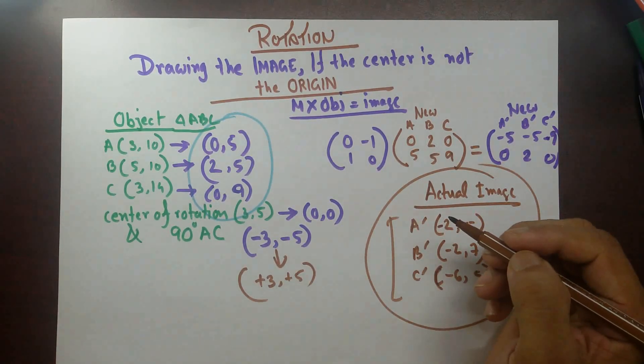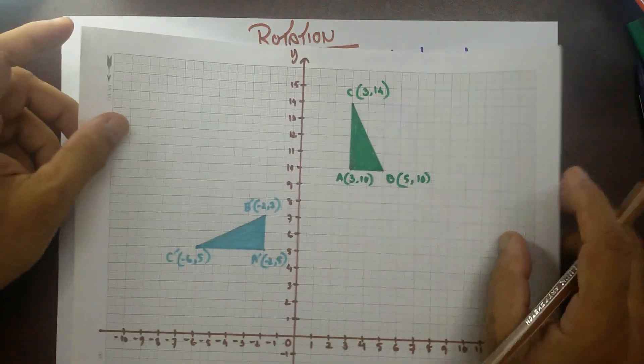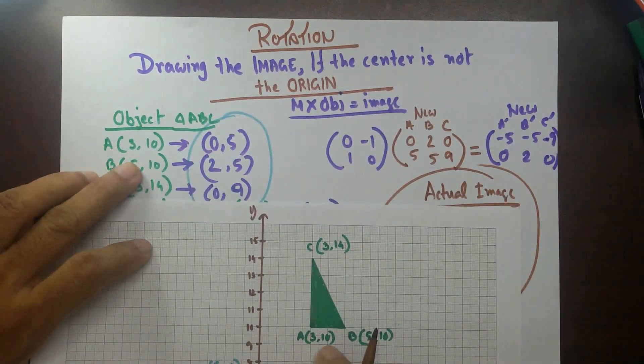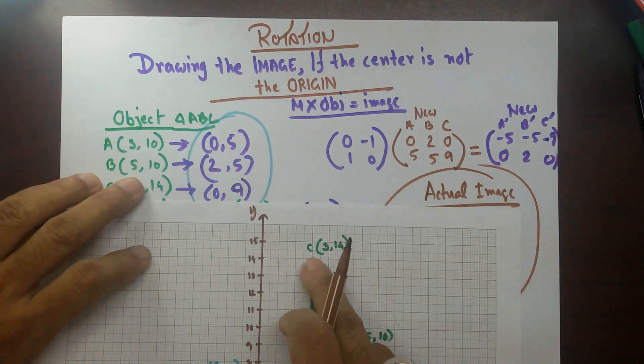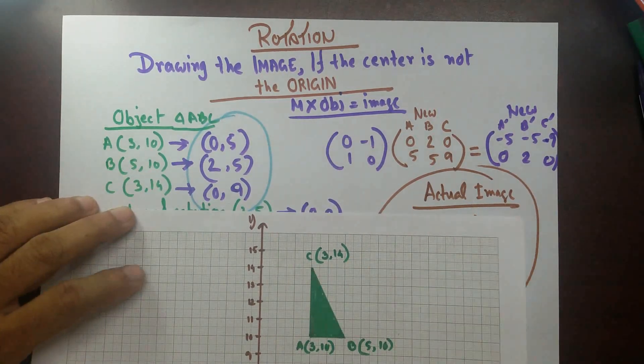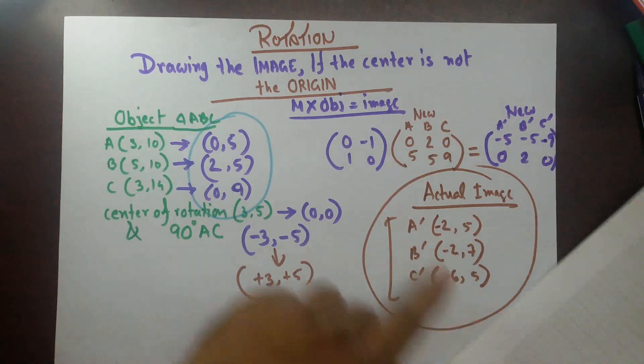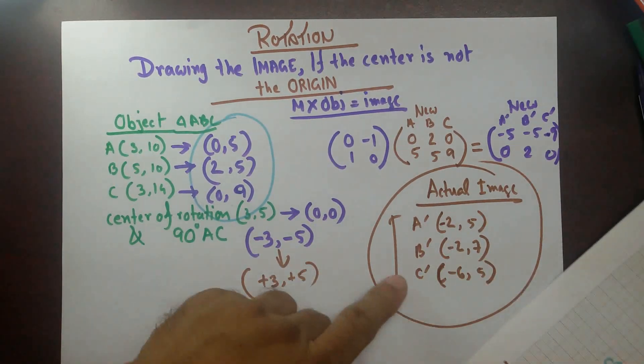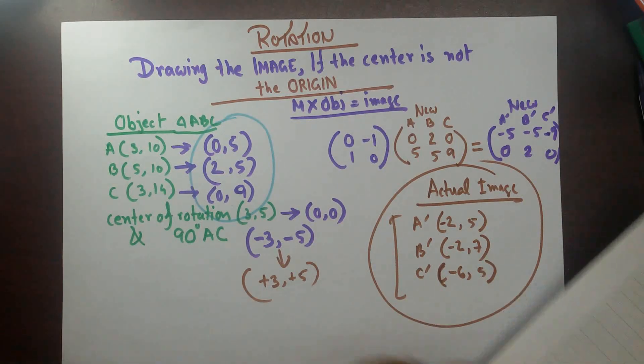So that's my actual coordinates of the actual image. I have drawn that one for you. And I'll just show you this, that A was, coordinates of A were 3,10, B 5,10, and C is 3,14. And then this actual, I got for A prime minus 2,5, B prime minus 2,7, and C prime minus 6,5.